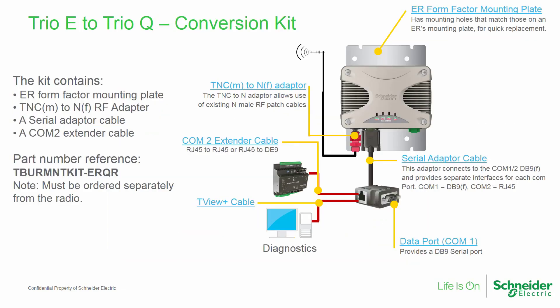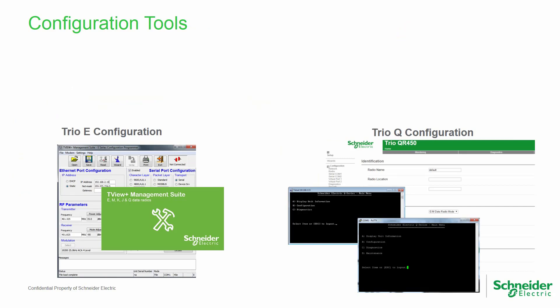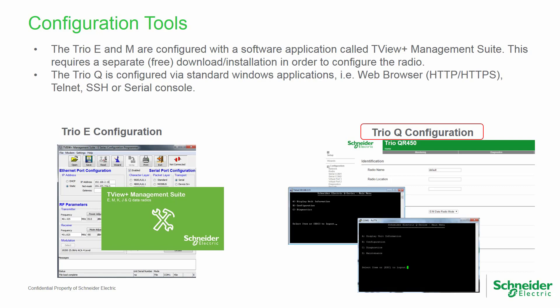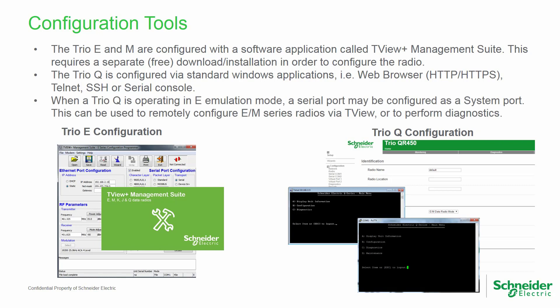Schneider offers a kit to aid in quickly changing an E-Series remote radio to a Q remote. It includes a mounting plate that matches the form factor of an ER, an RF adapter to allow use of the existing coaxial cable with its N connector, a serial adapter cable to allow easier access to the second serial port, and a serial cable for that port. The TRIO E and M-Series radios are configured with the TVU Management Suite software. The Q data radio, however, is configured with standard Windows applications such as a web browser, telnet, or secure shell for network access, or with a serial terminal such as HyperTerminal. Note that when a Q radio is in E-emulation mode, one of the serial ports may be configured as a system port and used to remotely configure E or M radios via TVU or to perform diagnostics.